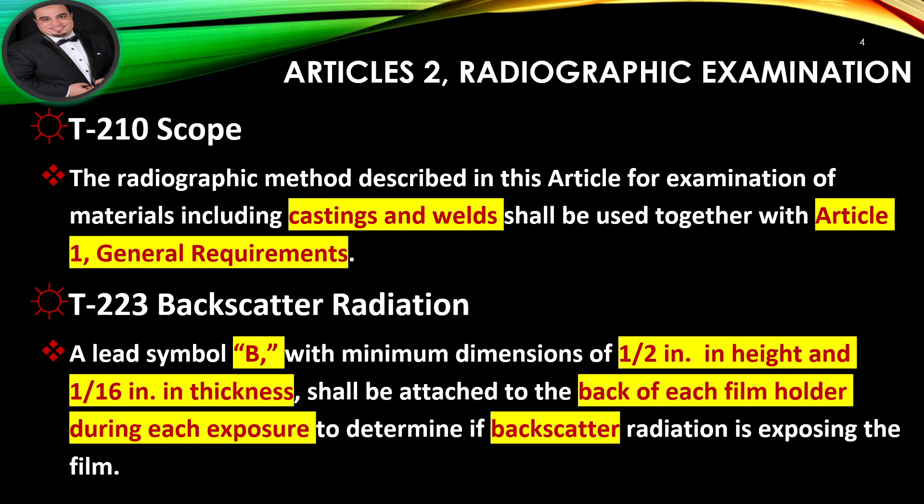Backscatter radiation: A lead symbol B, with minimum dimensions of half an inch in height and 1/16th inch in thickness, shall be attached to the back of each film holder during each exposure to determine if backscatter radiation is exposing the film.